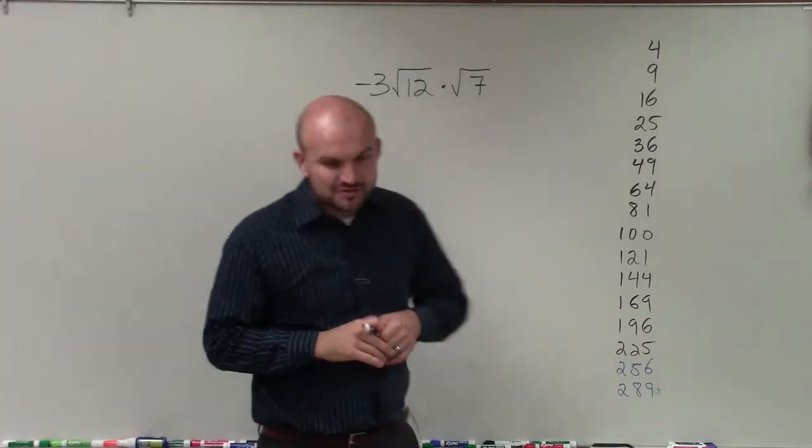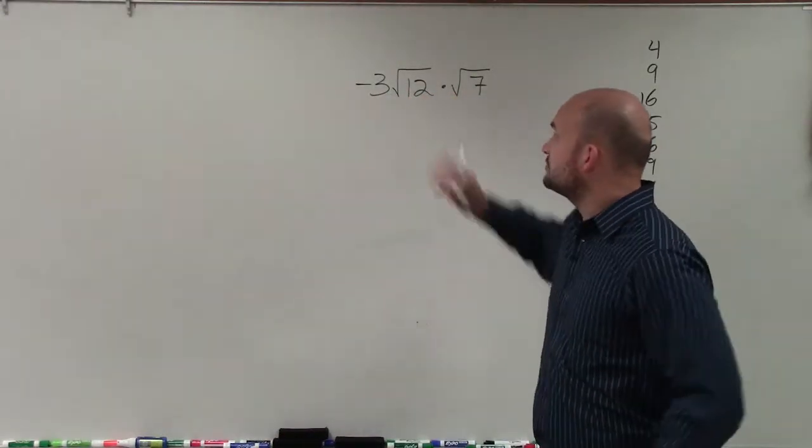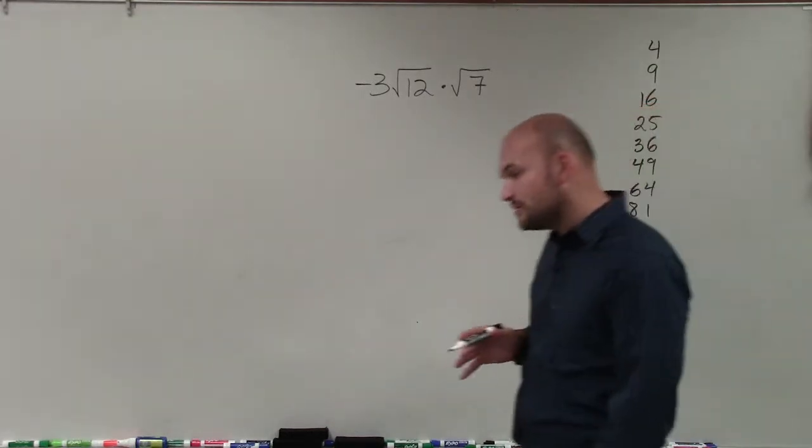Welcome there, Jim. So what I'd like to do is show you how to simplify this radical expression that has some multiplication here. So we are multiplying negative 3 times the square root of 12 times the square root of 7.